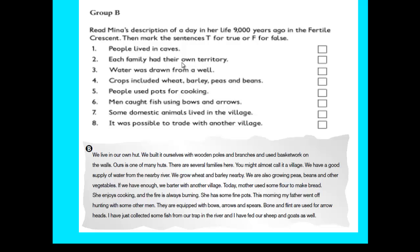Today, mother used some flour to make bread. She enjoys cooking and the fire is always burning. She has some fine pots. This morning, my father went off hunting with some other men. They are equipped with bows, arrows and spears. Bone and flint are used for arrowheads. I have just collected some fish from our trap in the river, and I have fed our sheep and goats as well.